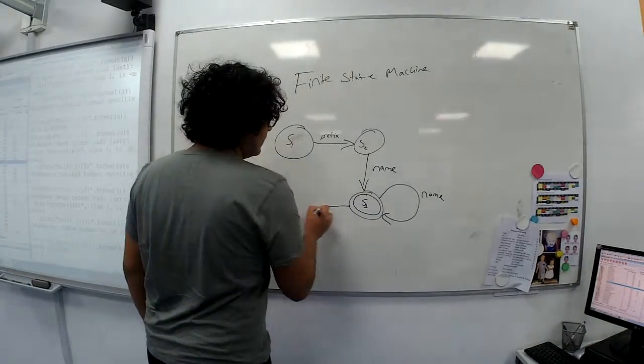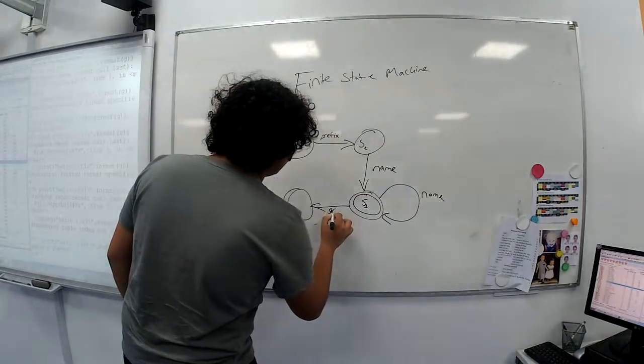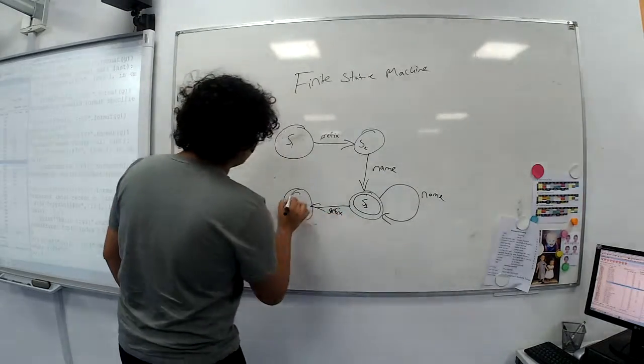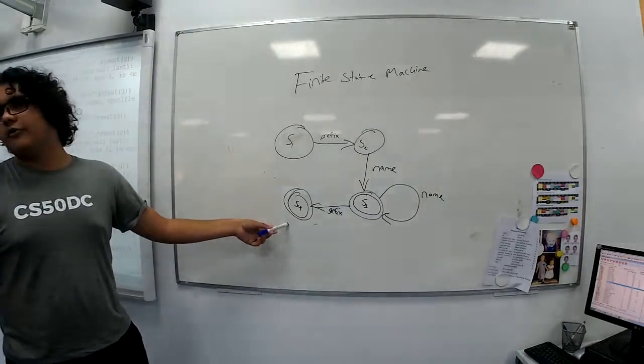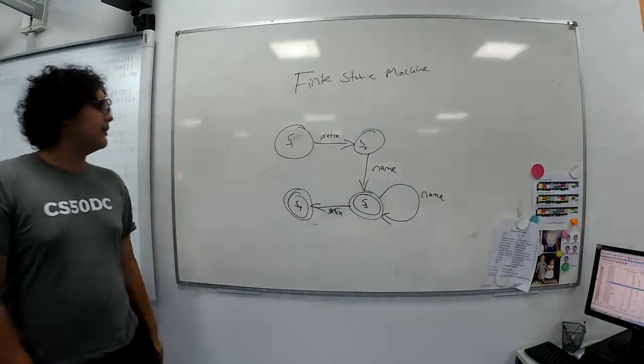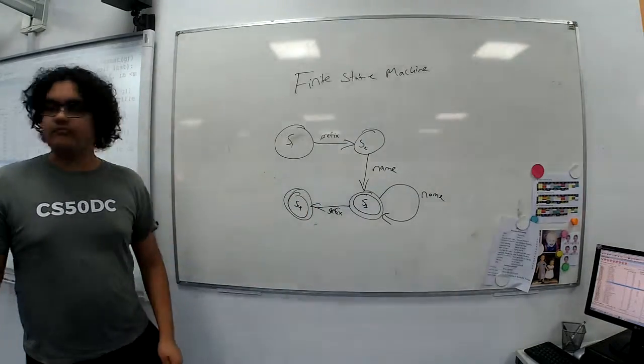And I mentioned about the suffix. We can obviously have multiple accepted states. So we could say if you add a suffix, that's still valid, but you can't add any more. So now we can't add any more names after the suffix. Any questions about this so far?